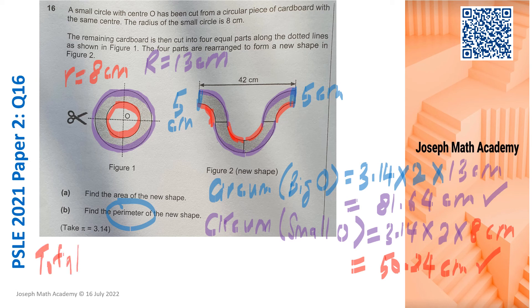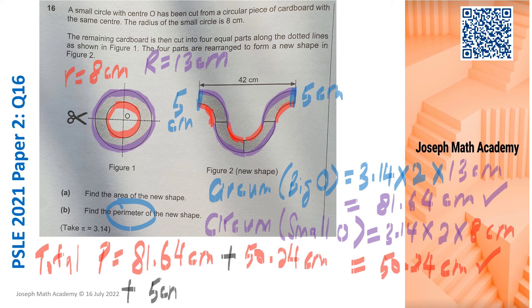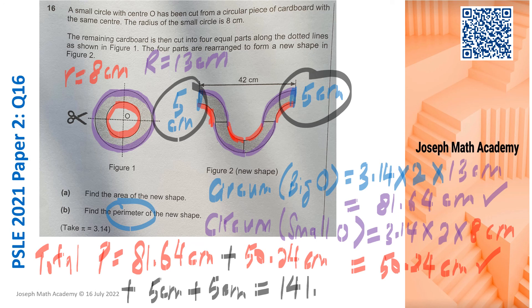So the total perimeter will be 81.64cm, circumference of the big circle, add the circumference of the small circle, 50.24cm. And don't forget to add the two straight lines, this and this. So if you add the four things together, 81.64 plus 50.24 plus 5 plus 5, it gives us 141.88cm. Part B is done.